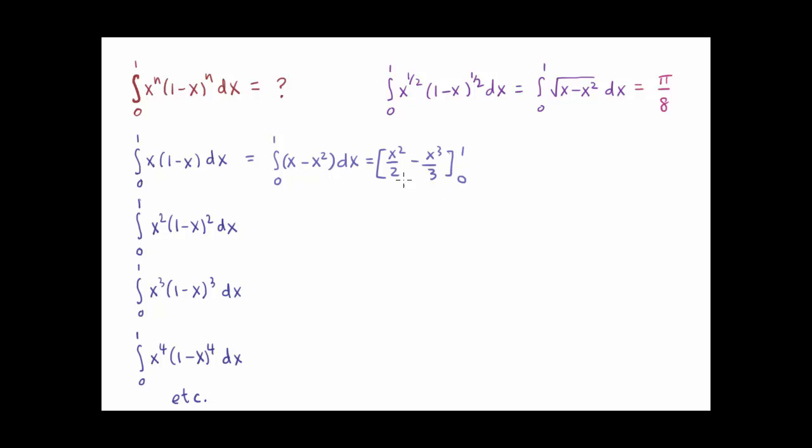And we want to evaluate that at x equals one and zero and subtract. When we substitute in zero, we get zero, so we're only going to care about when we substitute in one, which will give us one-half minus one-third. And that simplifies to one-sixth. So the area under x times one minus x between zero and one is equal to a sixth.